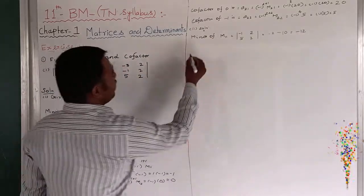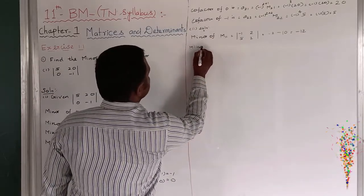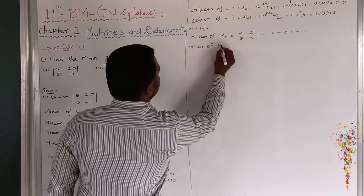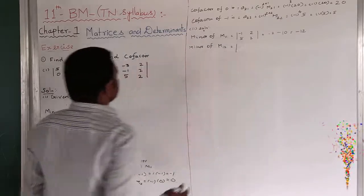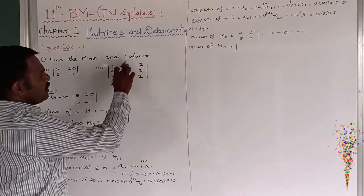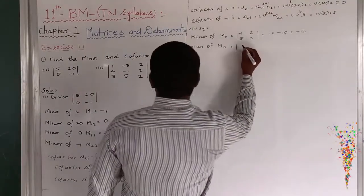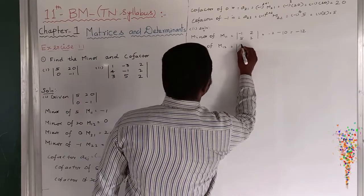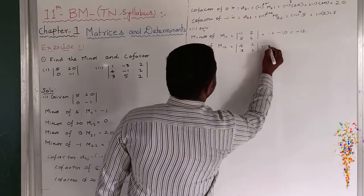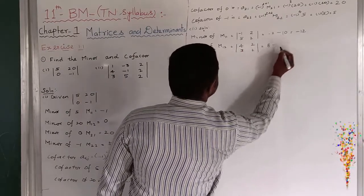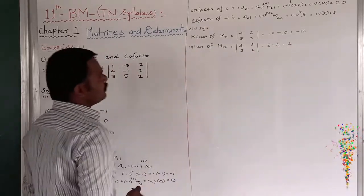Next, minor of M12: remove the first row and second column. The remaining is 4, 2, 3, 2. So the product terms are: 4 × 2 = 8, and 3 × 2 = 6. Therefore M12 = 8 minus 6 = 2.